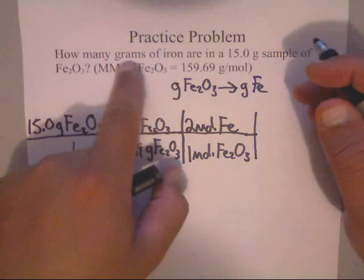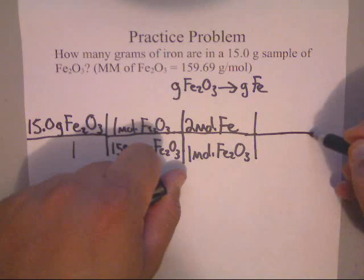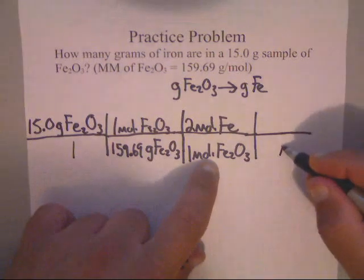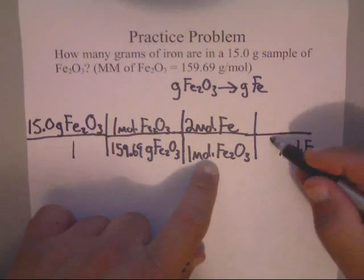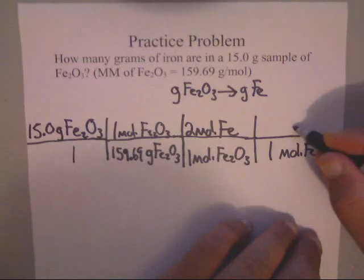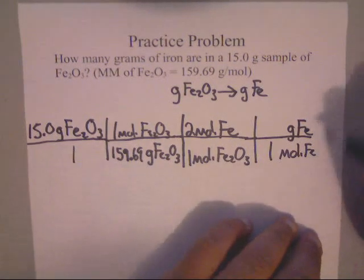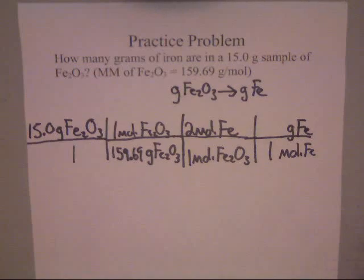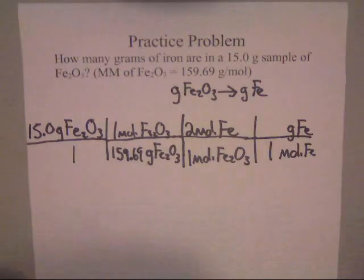If they just wanted moles of Fe we could stop, but they wanted grams of Fe, so we need to go another step. If this is moles of Fe, guess what goes down here - moles of Fe, and we're going to say one mole of Fe. Now we need to get grams of Fe up here because one mole of anything equals its molar mass. If you look on your periodic table, the molar mass of Fe is 55.85 grams.